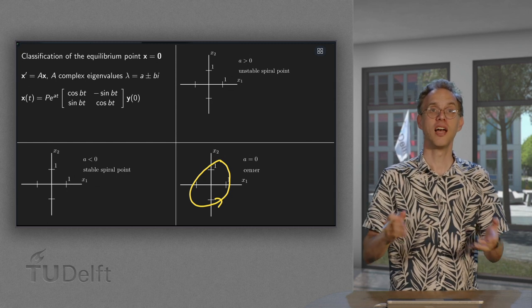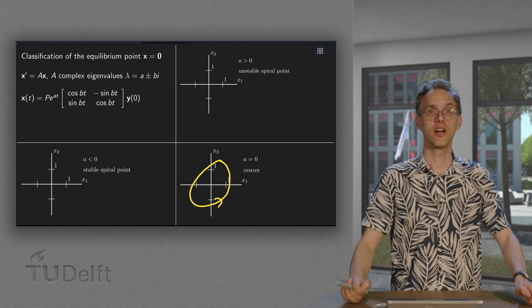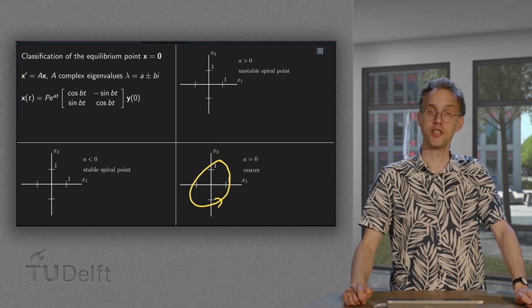We are just going round and round. And in that case our equilibrium point is called a center. So those are the three possibilities if we have complex eigenvalues for our phase space.